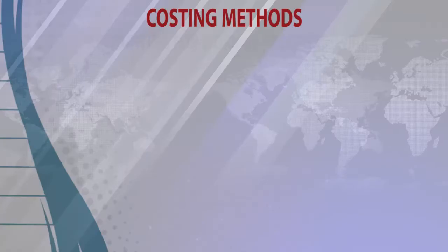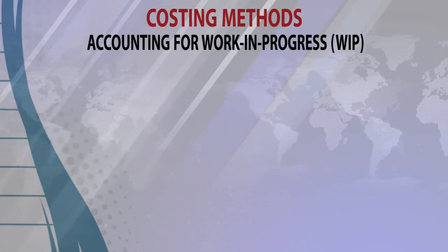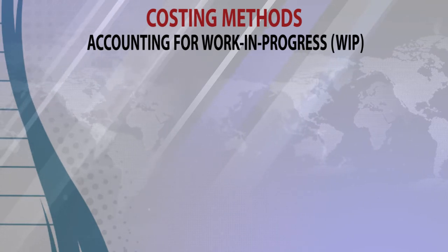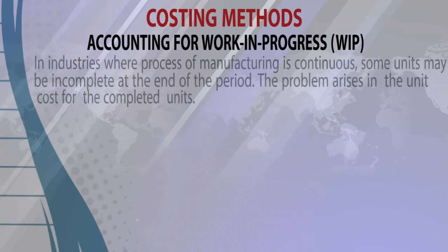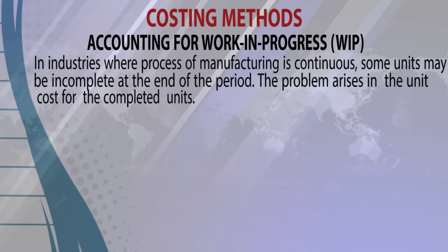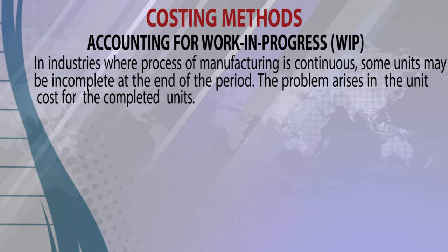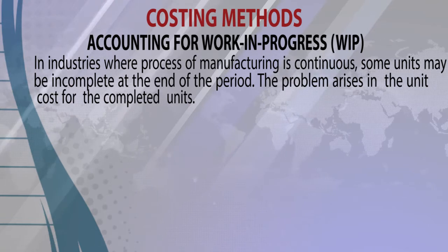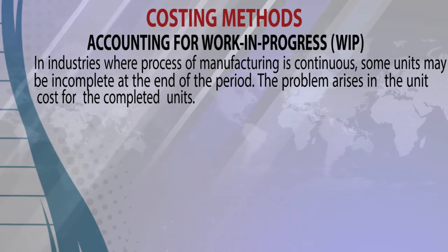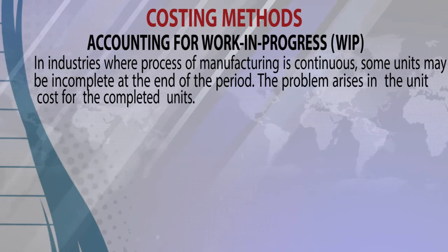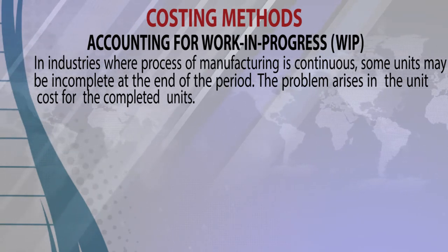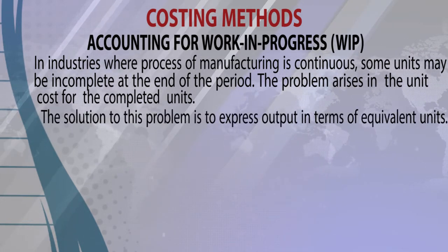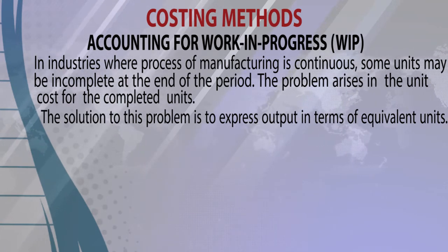Now we want to look at work in progress. In process costing with work in progress, we are required to understand what work in progress is and how we account for it. In industries where the process of manufacturing is continuous, some units may be incomplete at the end of the period. The problem arises in calculating the unit cost for completed units.